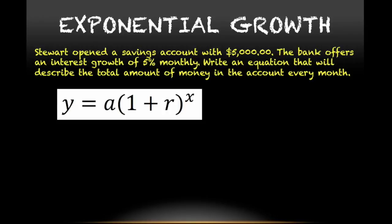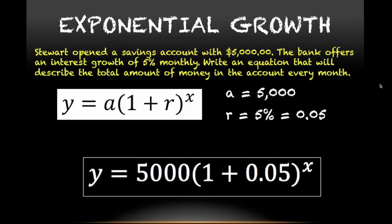In this problem, the value a is represented by the initial amount that's in the account, $5,000. And r, which is our rate, it's 5%, but we will change it to the decimal value. So with that, I have my a value, my r value, that is enough for me to write my equation. Y equals 5,000 times 1 plus 0.05 to the x power.